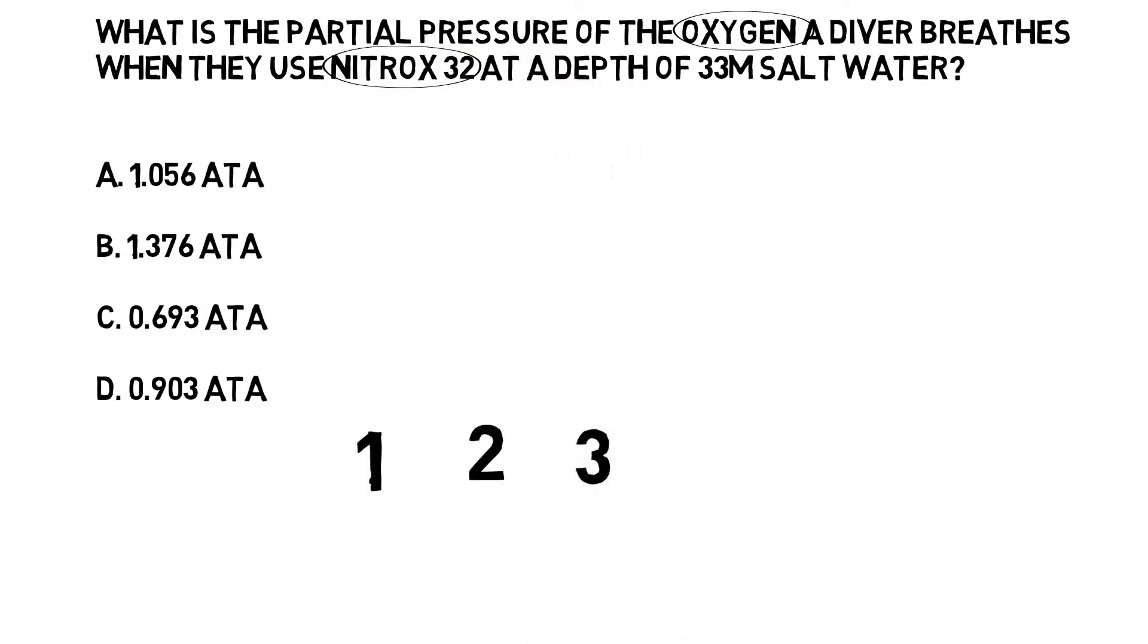A diver breathing nitrox 32 is breathing 32% oxygen. That is the information we need to use, and we would write 0.32 as a decimal under step one of our calculation.